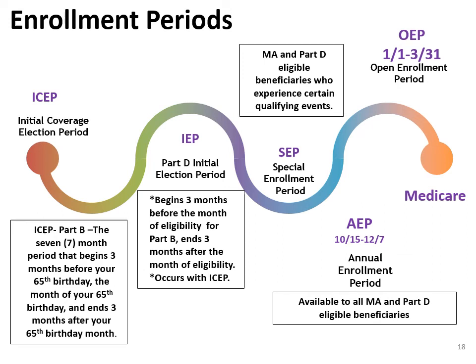Number 2: IEP, the Part D Initial Election Period, is a special enrollment time to enroll in Part D if you lost creditable Part D coverage or did not enroll in Part D during your ICEP.